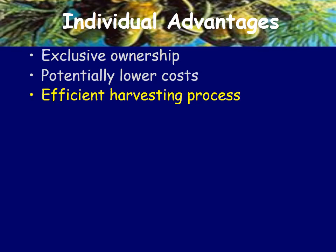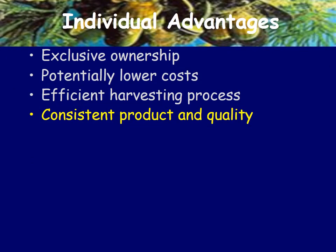An efficient harvesting process means you can harvest just when the market demands. You use only the resources you need — you don't catch any more than you have orders for, or any less.